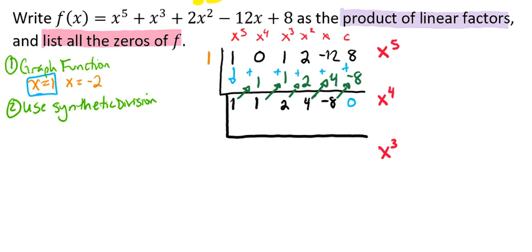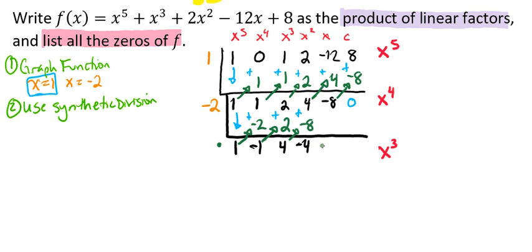Let's try x equals negative 2. Bringing down our 1 and multiplying: 1 times negative 2 is negative 2; adding gives negative 1; negative 1 times negative 2 is 2; adding gives 4; 4 times negative 2 is negative 8; adding gives negative 4; negative 4 times negative 2 is positive 8; adding gives 0. So we confirm that x equals negative 2 is a solution.